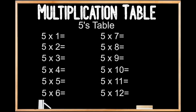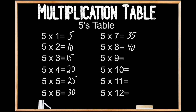5's table. 5 times 1 is 5. 5 times 2 is 10. 5 times 3 is 15. 5 times 4 is 20. 5 times 5 is 25. 5 times 6 is 30. 5 times 7 is 35. 5 times 8 is 40. 5 times 9 is 45. 5 times 10 is 50. 5 times 11 is 50. 5 times 12 is 60.